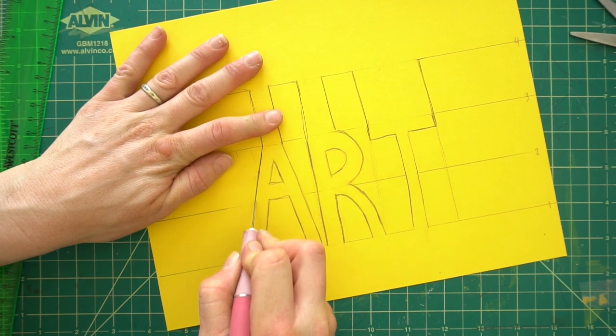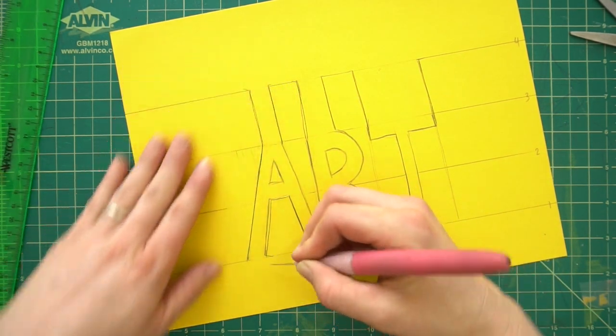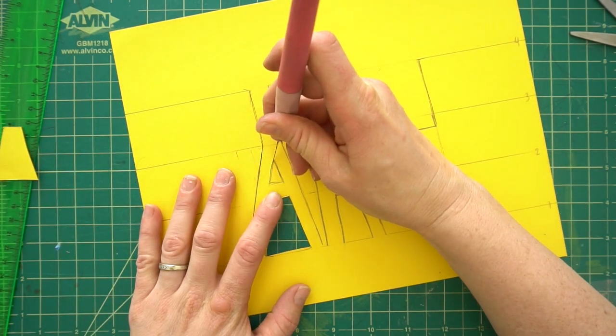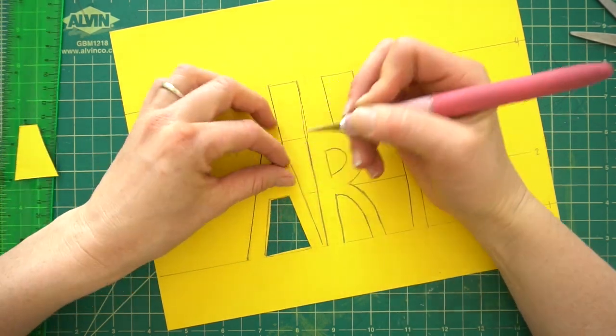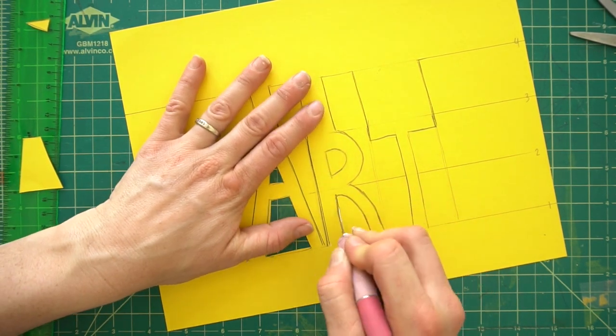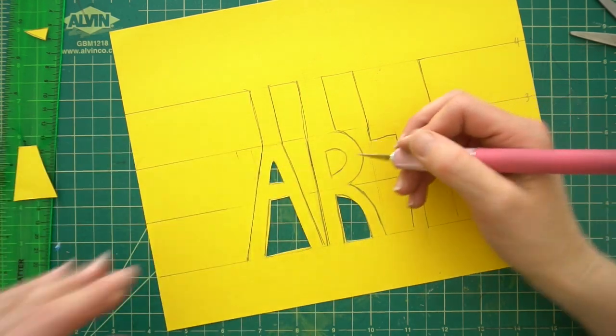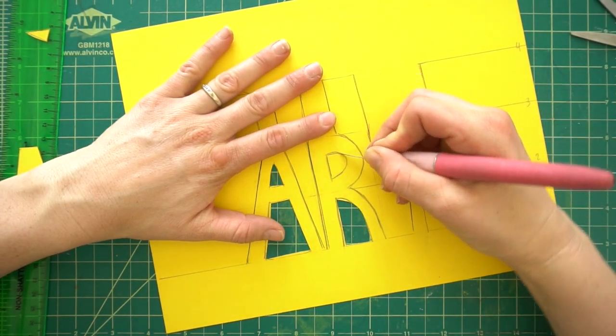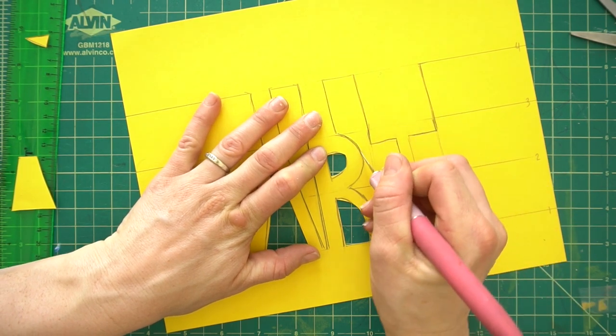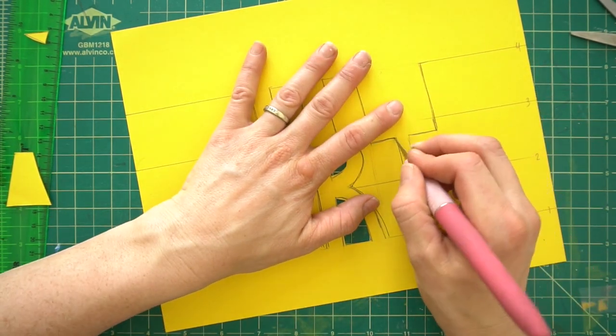And then just cut out the letters. If you want to decorate your letters, you need to do it before we cut these out. So I'm just cutting out the R. Curved lines are a little bit hard for me to cut out. Here's the T. This is my last letter.